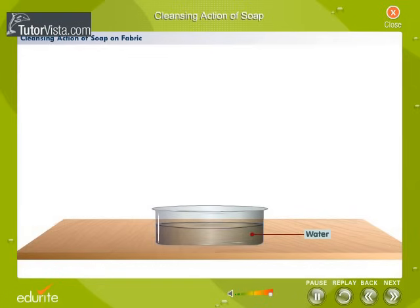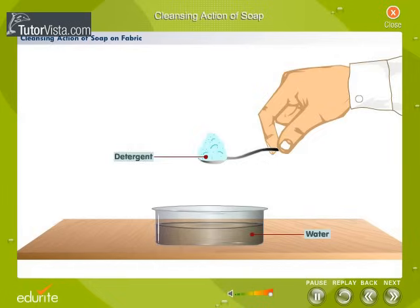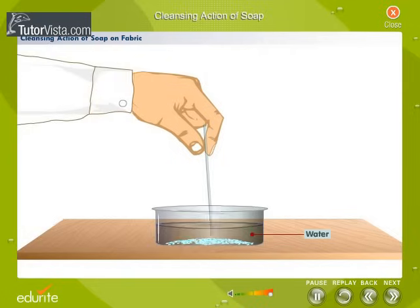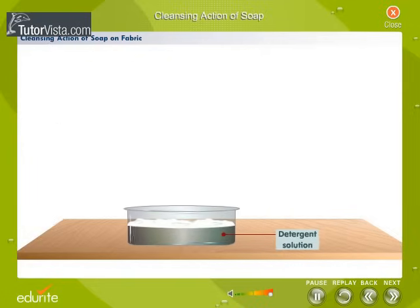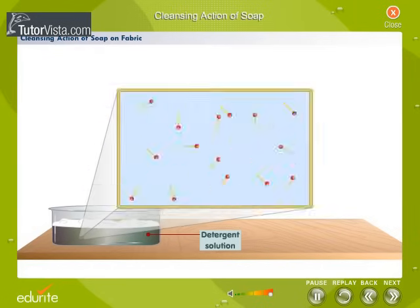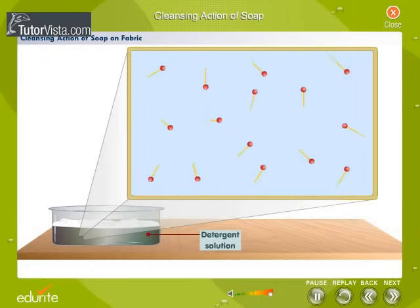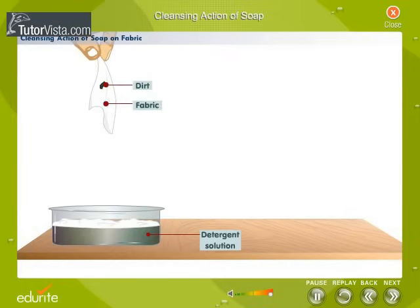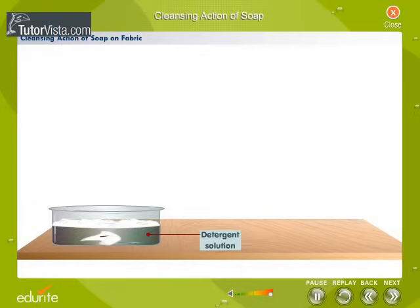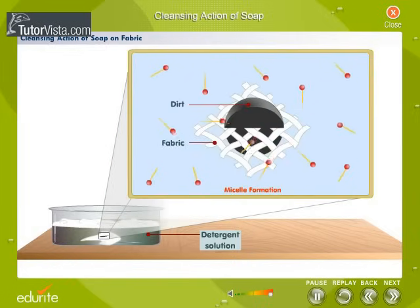Cleansing action of soap on fabric. To understand the cleaning action, let's observe what happens when we add detergent powder into water. When the solution is agitated, the soap dissolves completely. When a soiled garment is dropped into soap solution, an interesting phenomenon occurs: the soap molecules align themselves in radial clusters called micelles.